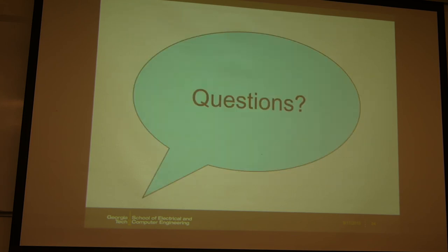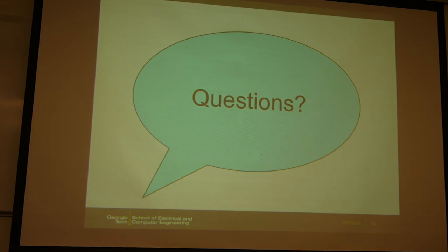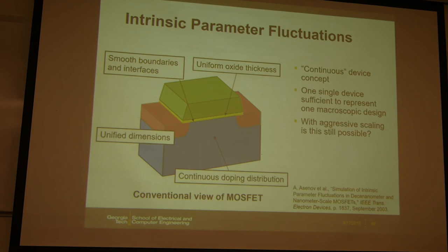The key challenge for SRAM design in today's advanced technology nodes is how to overcome variability. SRAM cells will have different noise margins, and you have to account for the worst case in your design. We need to understand the sources of those variability effects, and we will spend the next couple of slides discussing the origins of intrinsic parameter fluctuations in transistors.